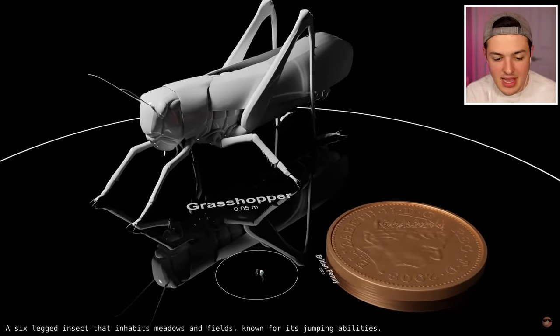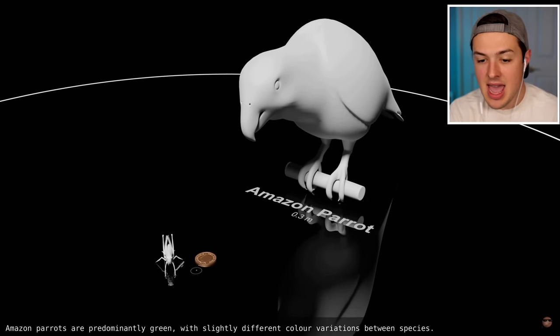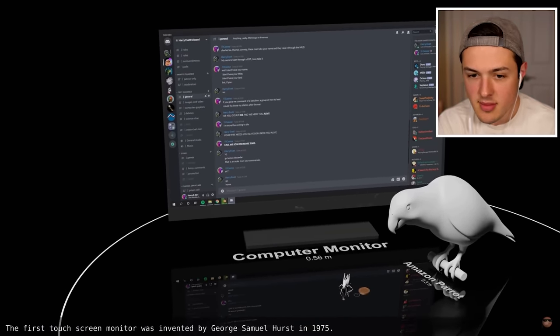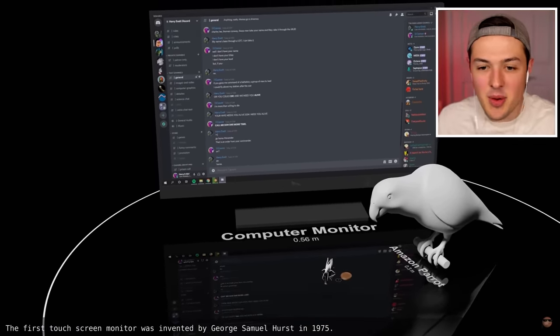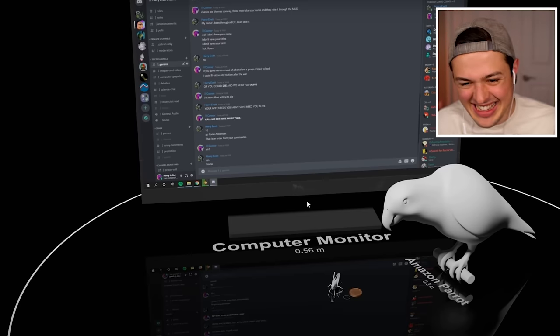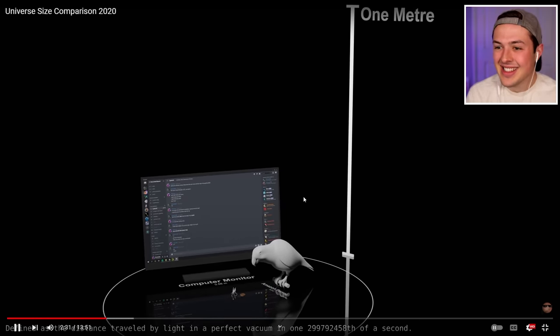A grasshopper, a six-legged insect that inhabits meadows and fields. If you didn't know. An Amazonian parrot. Predominantly green, apparently. A computer monitor. What does that say? Charles Lee, Thomas Conway. These men take your name and take it through the mud. My name's been through a lot. I can take it. Well, I don't have your name. I don't have your titles. That's Hamilton. They got Hamilton in the back. Oh, that's funny.